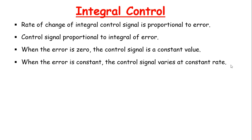So integral action is needed. Integral action is provided by summing the error over time, multiplying that sum by a gain, and adding the result to the present controller output. If the error makes random excursions above and below zero, the net sum will be zero, so the integral action will not contribute.